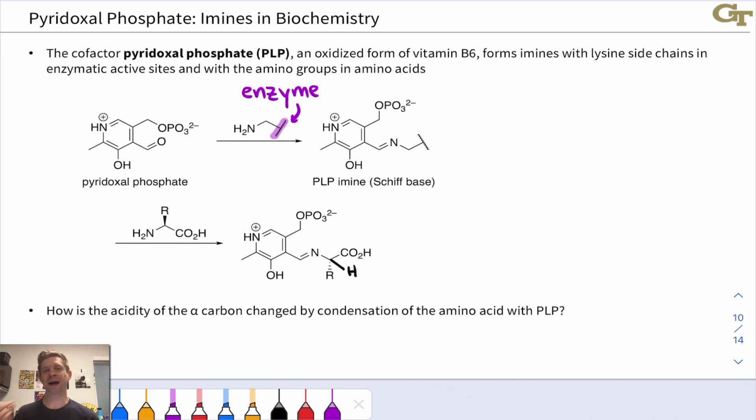In the remainder of this video, I want to look at an important biochemical example of a compound that can form imines and that actually contains an embedded iminium ion, and see how an understanding of the chemistry of imines and iminiums really helps us get a handle on what's going on with this molecule and why it's such a useful cofactor. The specific chemistry here is not so important—what are the reactants, what are the products—it's the general idea that fundamental organic chemistry ideas about imines and enamines can help us understand what's going on here and rationalize why the chemistry works the way it does. The cofactor we're going to look at is called pyridoxal phosphate or PLP. It's an oxidized form of vitamin B6, and it contains an aldehyde functional group.